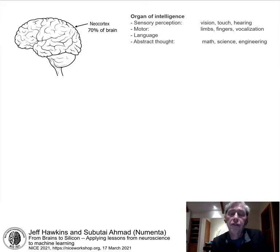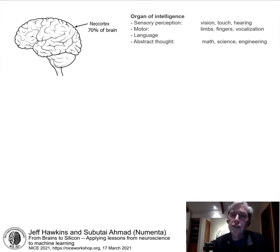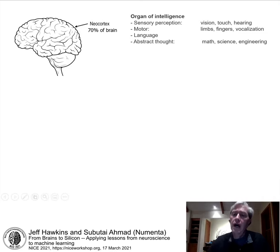Everything we think of as intelligence happens in the neocortex: all high-level sensory perception — vision, touch, hearing — all conscious and thoughtful motor behaviors, moving our limbs, manipulating objects. The vocalization of speech is generated by neurons in the neocortex. All forms of language are created and understood there — written, spoken, mathematics, music — as well as high-level abstract thought in science, engineering, and the arts. It's all the product of the neocortex.